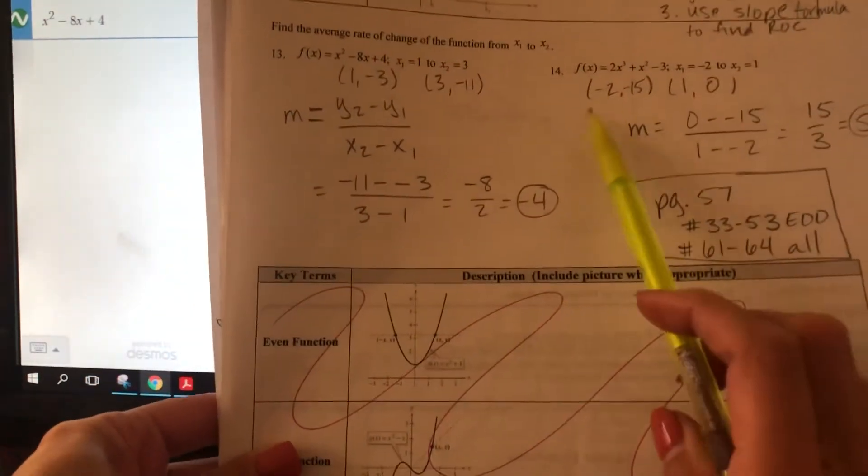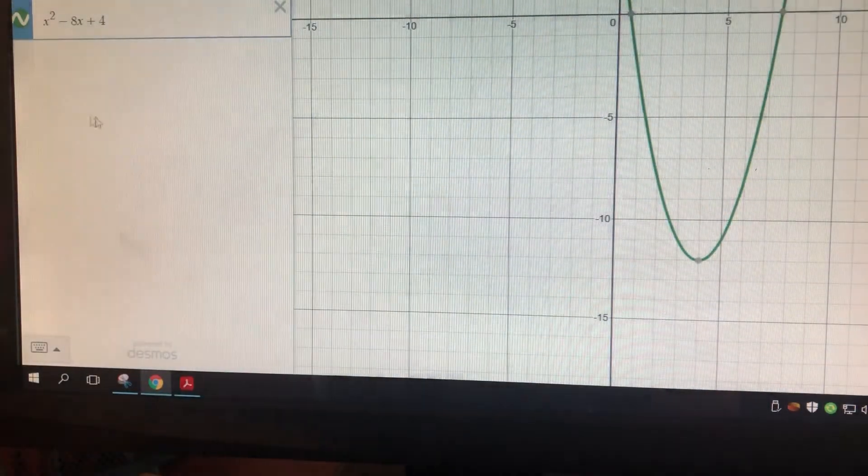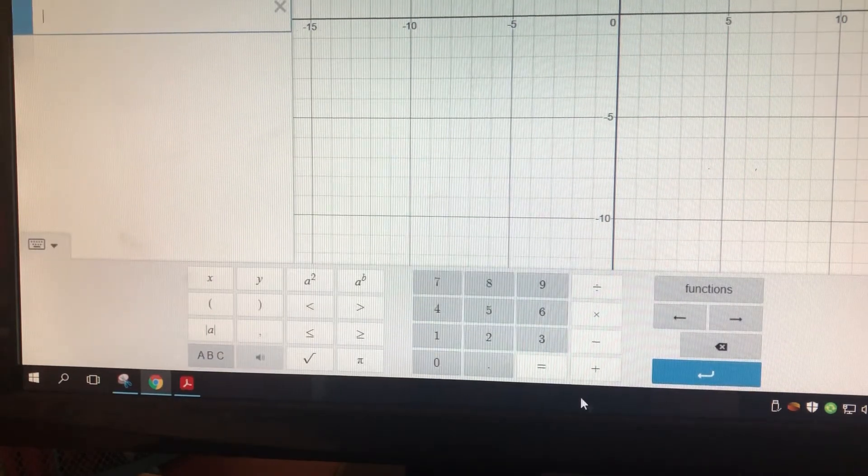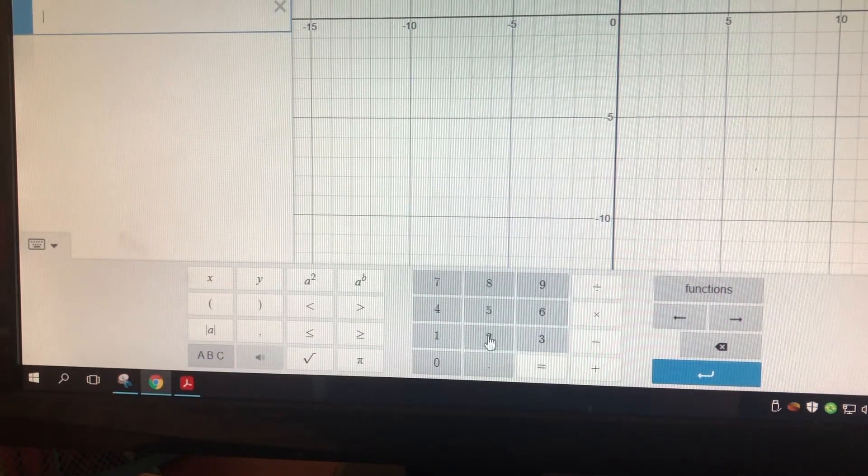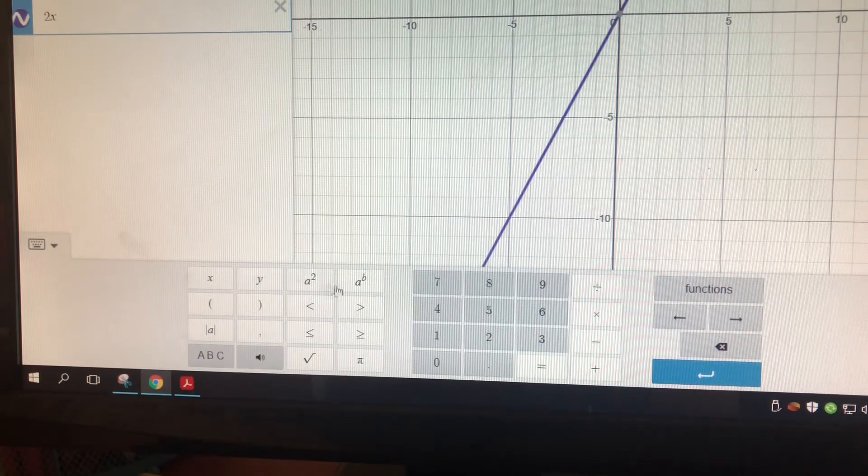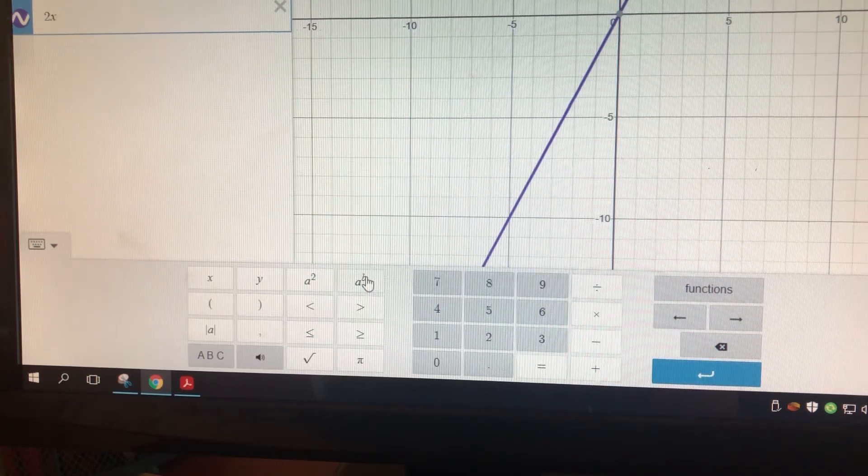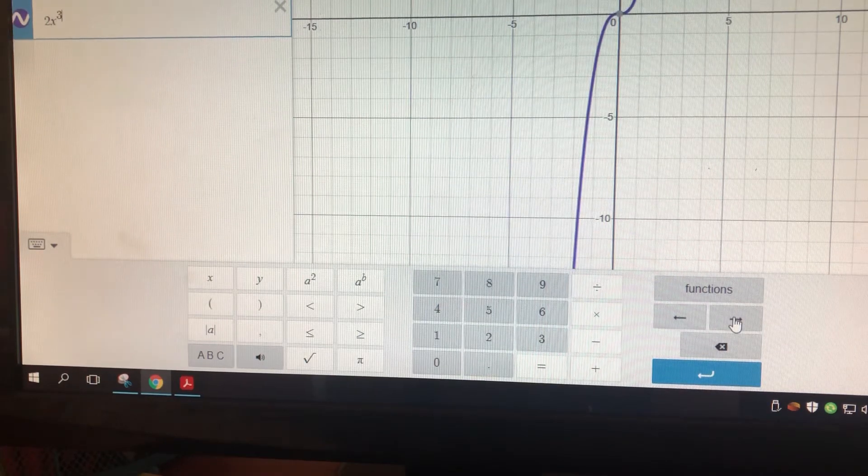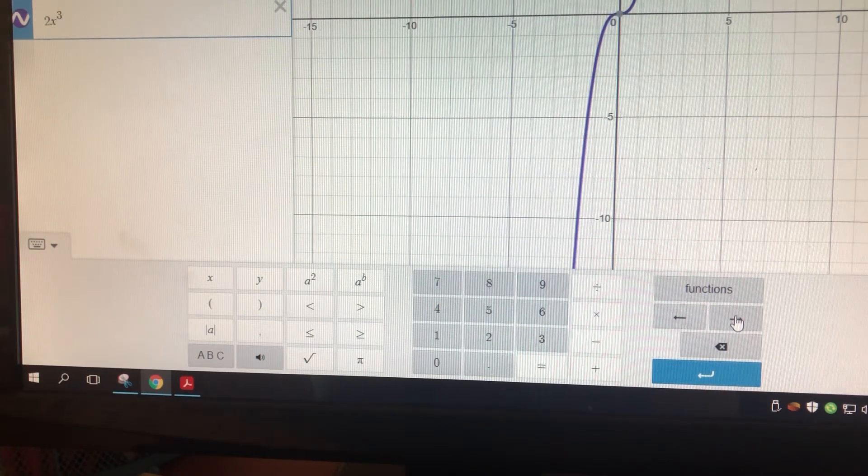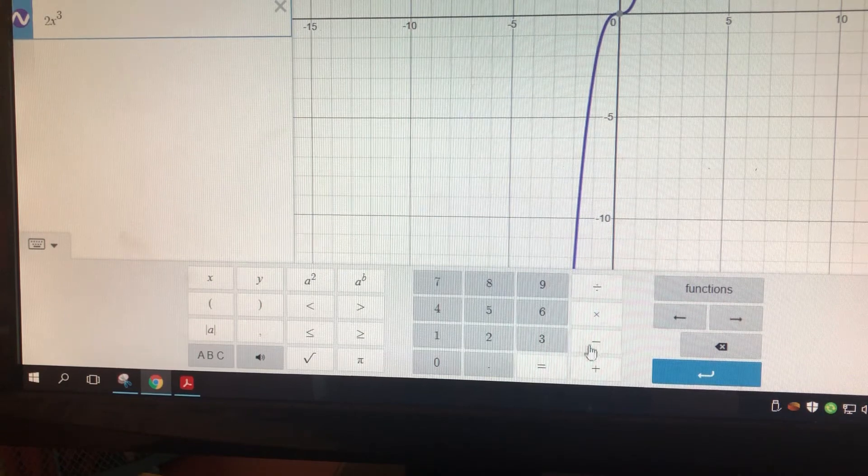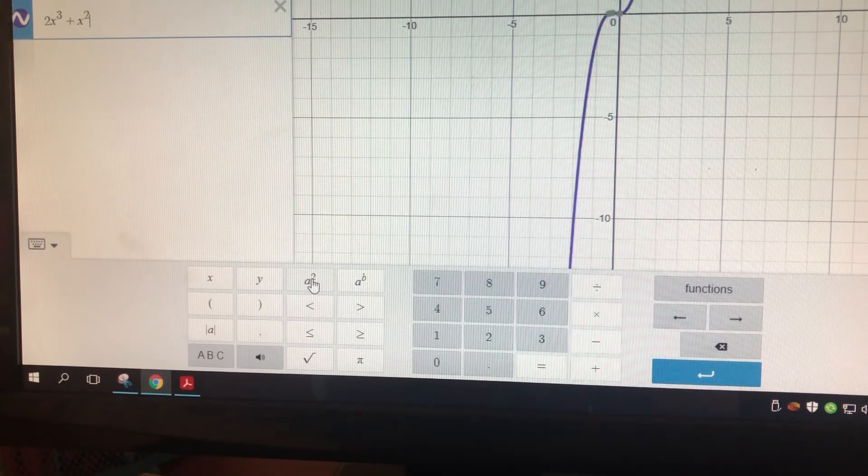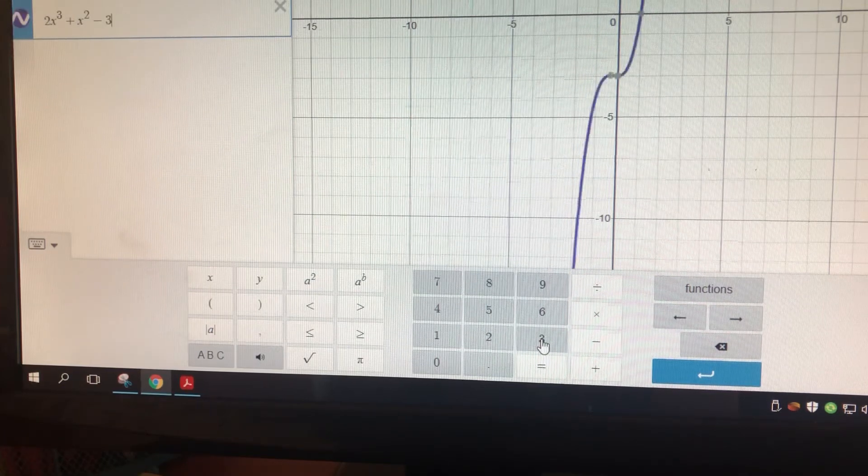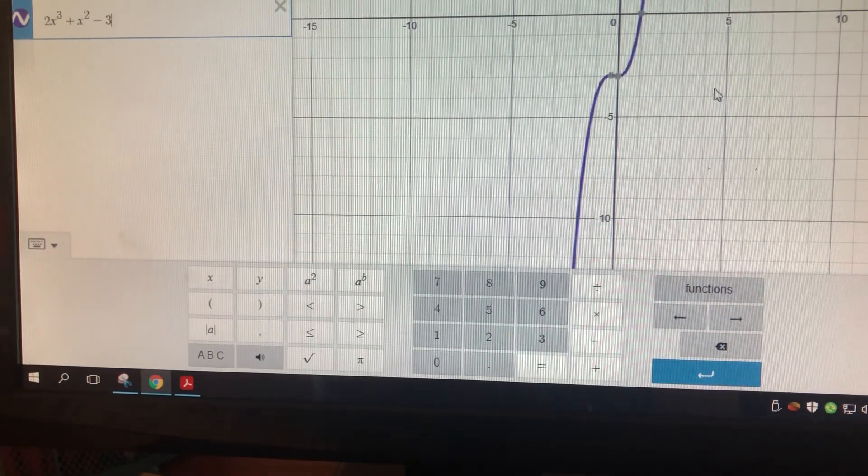So let me show you just one more. Let's do 14 real quick. So 2x to the third, I'm going to do the a to the b here. And then type in 3. And then cursor over here. Plus x squared minus 3. So there's your function there.